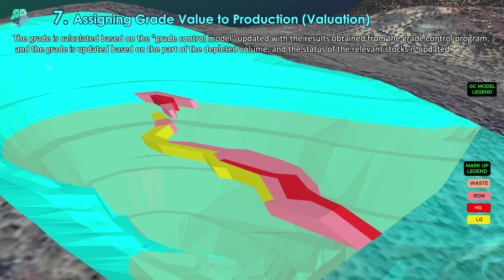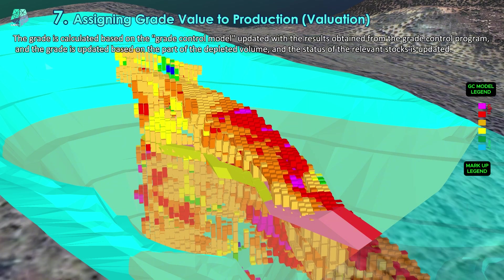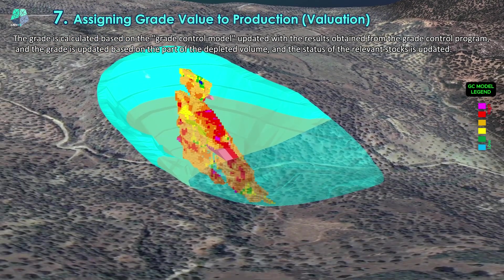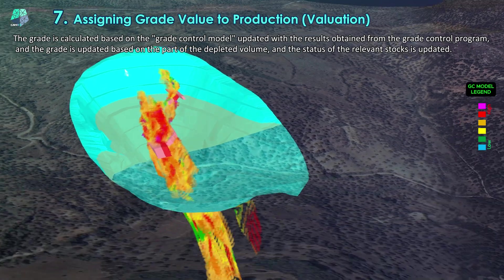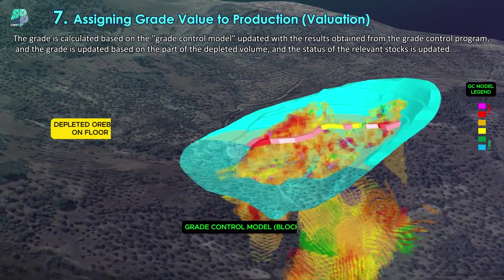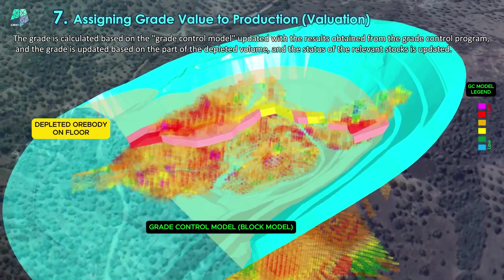The truck operator informs the scale attendant of the ore type being carried, ensuring that production statistics remain accurate. The grade is calculated based on the grade control model updated with the results obtained from the grade control program, and the grade is updated based on the depleted volume and the status of the relevant stocks.